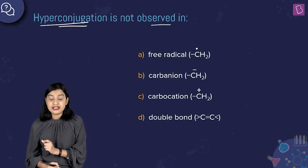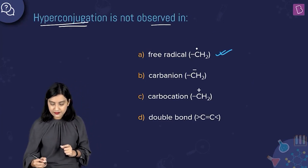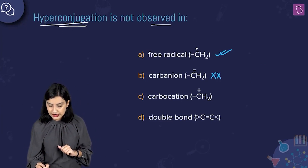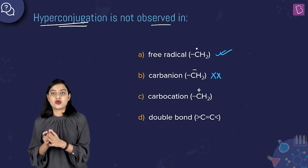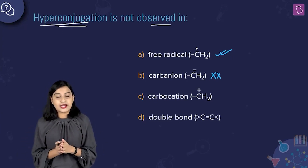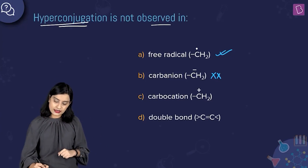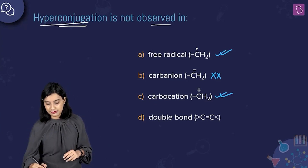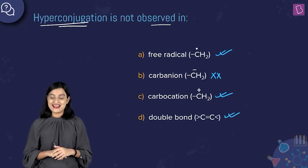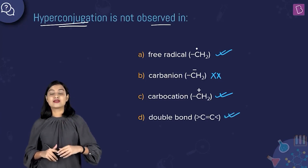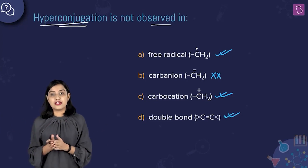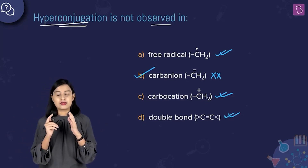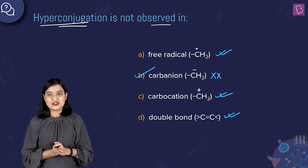So where is hyperconjugation observed? Option A, free radical — yes, definitely observed. Option B, carbanion — no, hyperconjugation is not observed in carbanions or it does not play a major role there. Option C, carbocation — yes, most definitely. Option D, double bonds — yes. So option B, carbanion, is the right answer to this question.